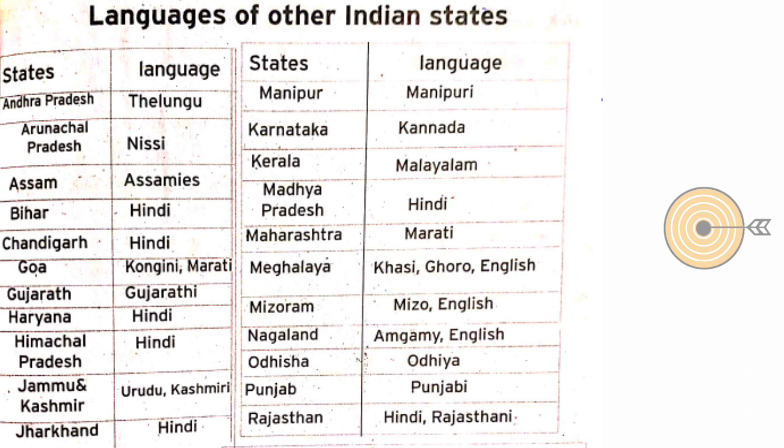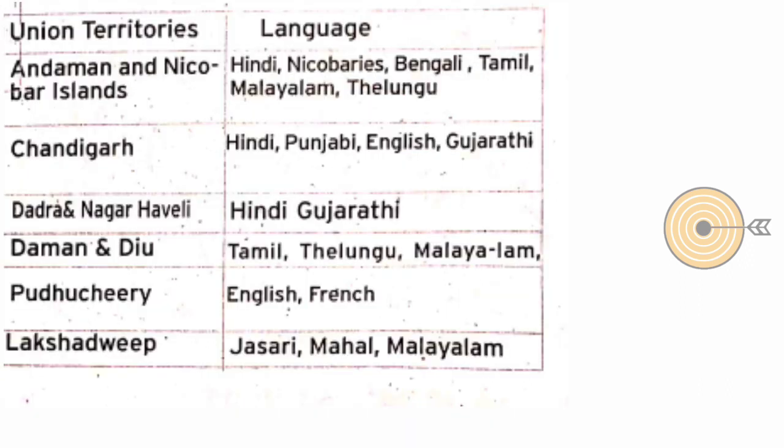Now let's look at the Union Territories and their languages. Andaman and Nicobar Islands — Hindi, Nicobarese, Bengali, Tamil, Malayalam, and Telugu — six languages in Andaman and Nicobar. Chandigarh — Hindi, Punjabi, English, and Gujarati — four languages in Chandigarh.